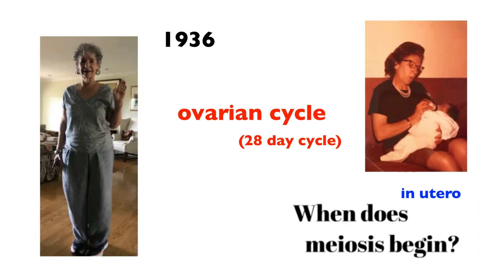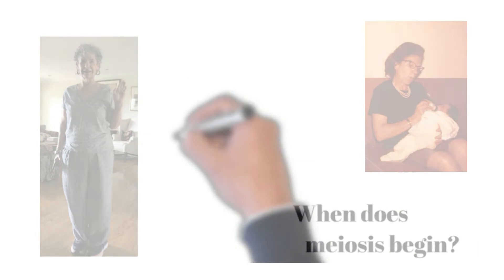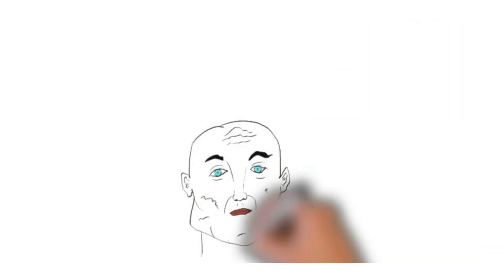To be clear, the egg that produced me — I was born in 1968 — first started meiosis sometime in 1936 and completed meiosis in 1967, nine months before I was born. And that's it for cell division, mitosis, and meiosis.